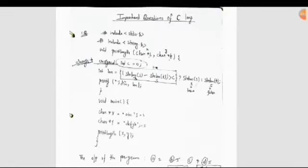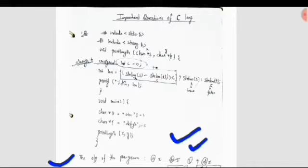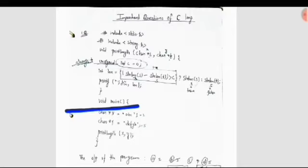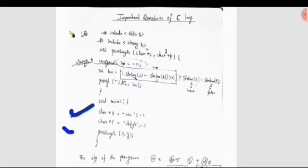The first question gives a line of code and asks us to find the output of the program. The four options are: option A is 2, option B is 3, option C is 4, and option D is 5. We start from the void main function. In void main, there is a character pointer x equal to 'abc' and character pointer y equal to 'def'. We can detect that the length of x is 3 and the length of y is 5.